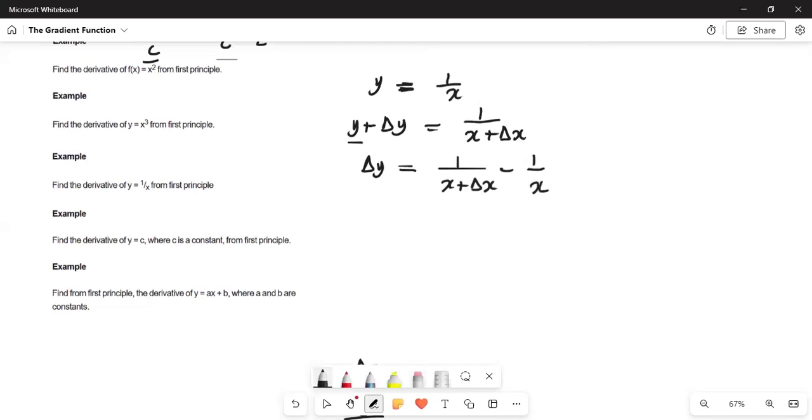So now we can solve this fraction. LCM of x plus delta x and x is x plus delta x times x. Then we put the x in front. So that by this, we'll divide this LCM by this x plus delta x. Look at this. We can write it as x times x plus delta x. This will cancel this, so we're left with x.